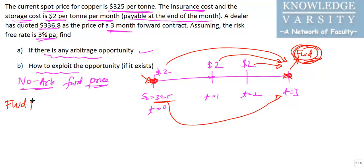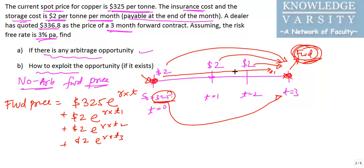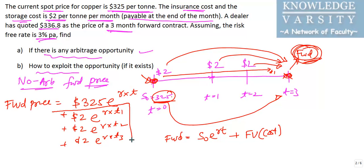The forward price equals the spot price brought forward: $325 · e^(rt), where r is the risk-free rate and t is the time period. Then we add the future value of each storage cost payment: $2 · e^(r·t1) + $2 · e^(r·t2) + $2 · e^(r·t3). So the formula is: Forward Price = S₀ · e^(rt) + Future Value of Costs.